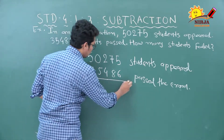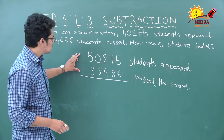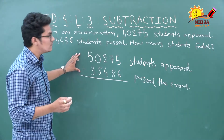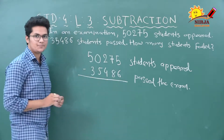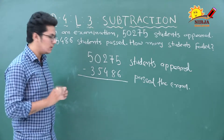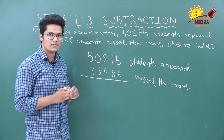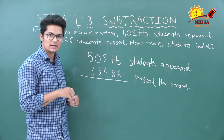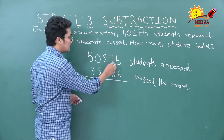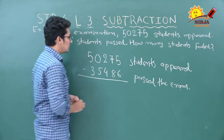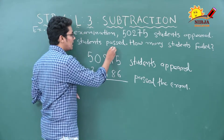We have decided to do subtraction to find the difference, and that difference is our answer to how many students failed. Starting from the ones place: 5 minus 6 is not possible because 5 is less than 6. So we will borrow from the tens column. There are 7 tens in the tens column, so after borrowing one ten, 6 tens remain.